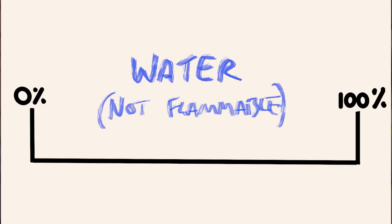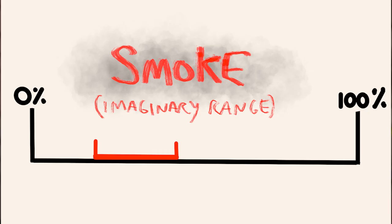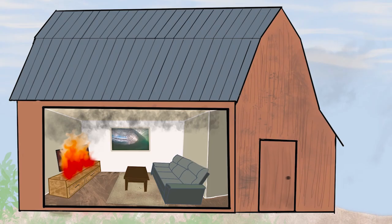But smoke doesn't only contain flammable gases — we also have H2O, or water, which is not flammable, and carbon dioxide, which is also not flammable. So the flammability of smoke is really hard to estimate without measuring it. For the purposes of demonstration, we're going to use an imaginary flammability range for smoke. It's important to note this is entirely imaginary, because the actual flammability of smoke can vary greatly depending on the combustion process, the availability of air, and the substances being burnt.